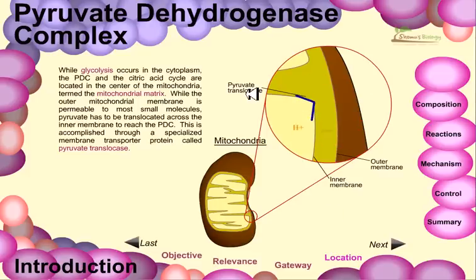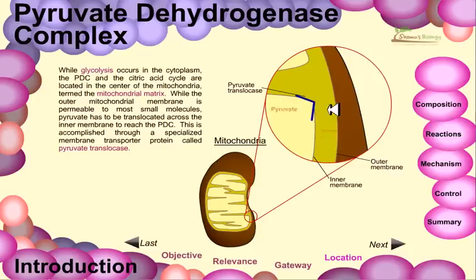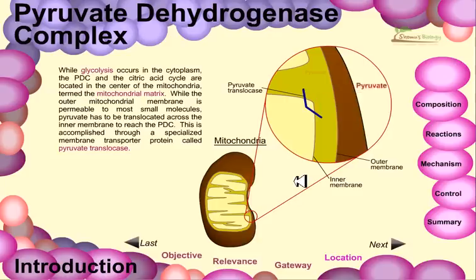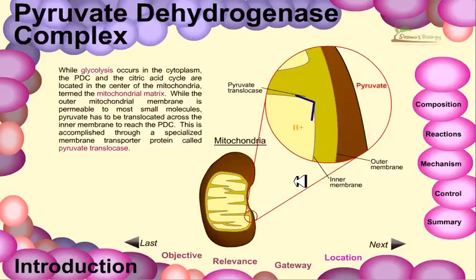Looking at the structure of pyruvate translocase, it acts like a valve. When a proton moves toward the matrix direction, it opens in that direction and closes on the opposite side, allowing only pyruvate to move through. This pyruvate translocase protein is constantly changing its conformation as it transfers molecules. When transferring a proton, it changes its structure to carry the proton outside the mitochondria into the cytosol. After transporting the proton out, it then changes conformation again to transport pyruvate from the cytosol into the mitochondrial matrix.